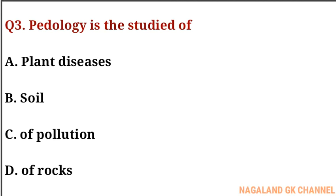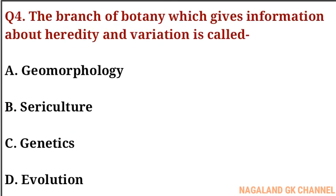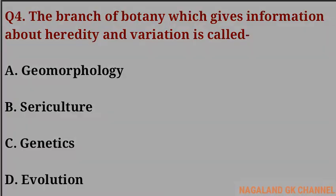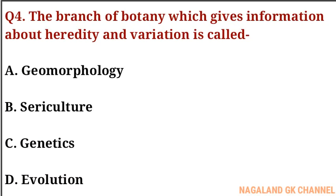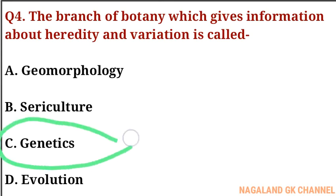Question number three: pedology is the study of what? The correct answer is option B, that is soil. Question number four: the branch of biology which gives information about heredity and variation is called what? The correct answer is option C, that is genetics.